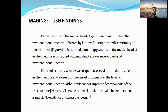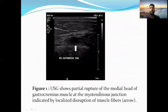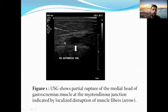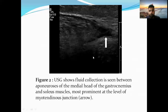On imaging, the USG shows an anechoic fluid collection representing the tear. In this image, we can see USG showing partial rupture of the middle head of gastrocnemius, represented as an anechoic fluid collection between the middle head of gastrocnemius muscle at its musculotendinous junction, indicated by local disruption of muscle fibers. Here we can see fluid tracking between the aponeurosis of the middle head of gastrocnemius and soleus muscle, most prominent at the level of the musculotendinous junction.